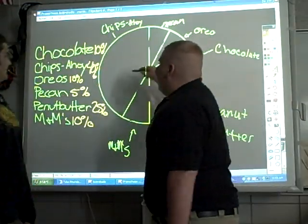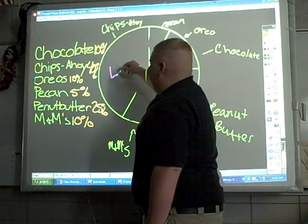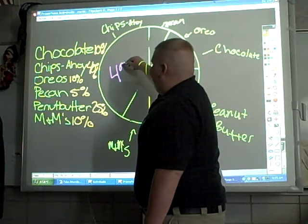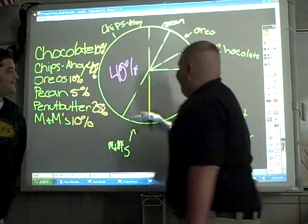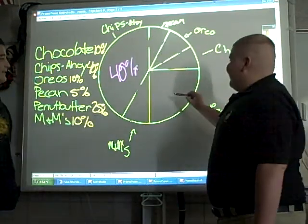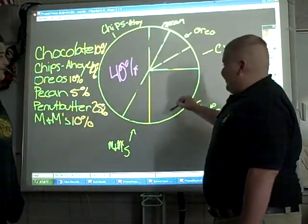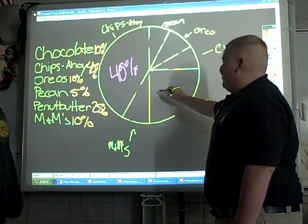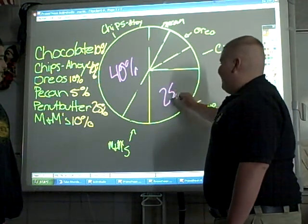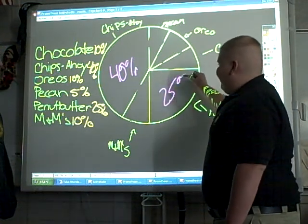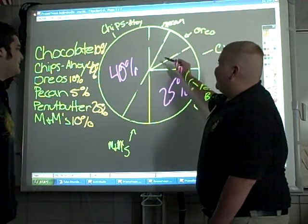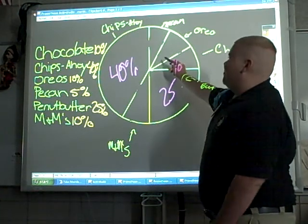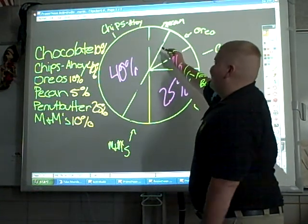You put 40 right here because it's the biggest. The second biggest, you're going to put 25 right there. This is like the smallest, so I think we should put a 5 right here.